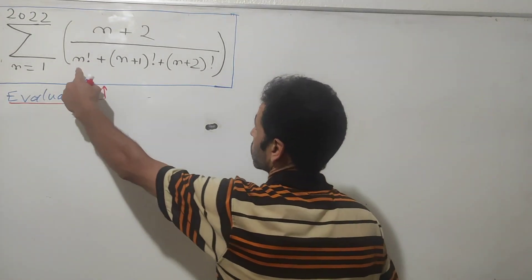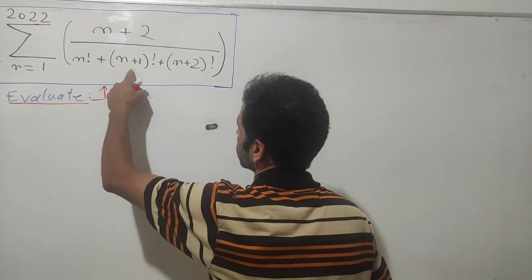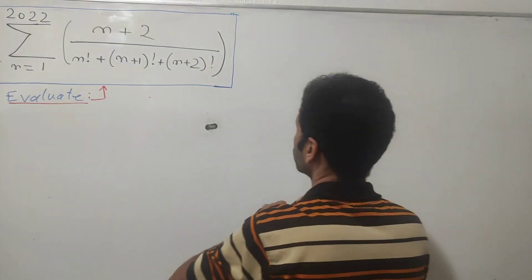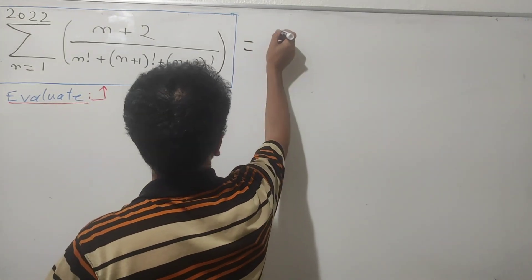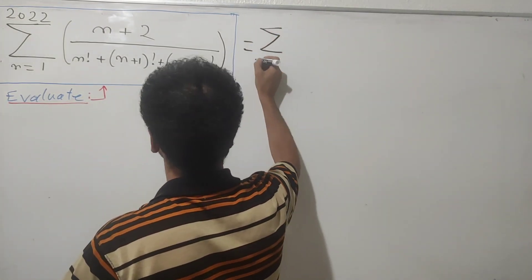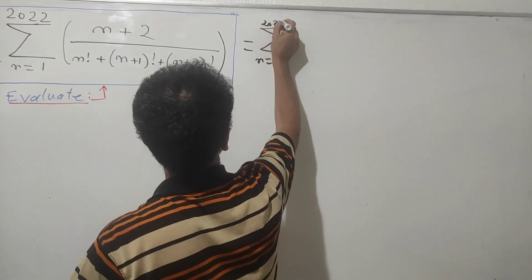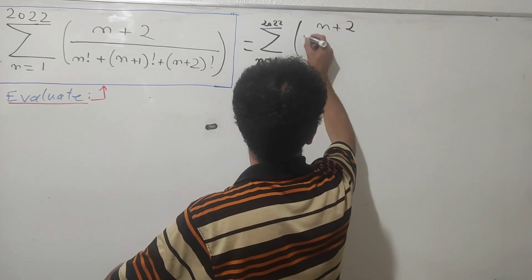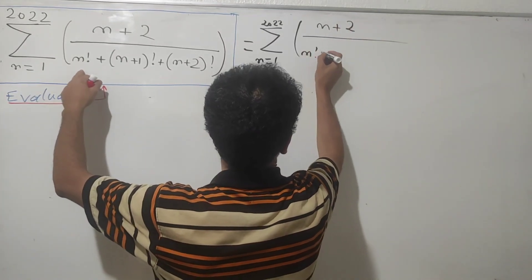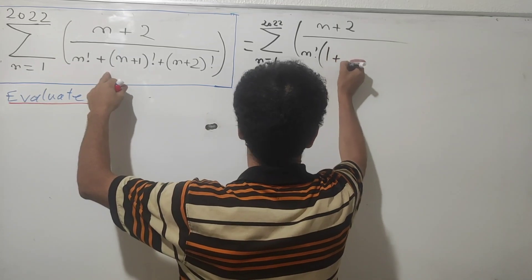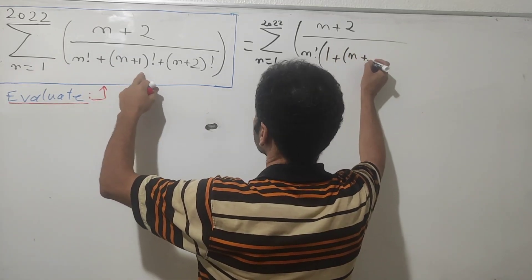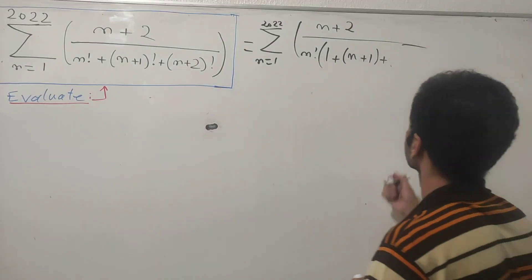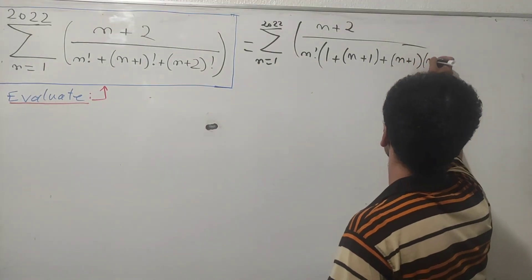Let's get started. I'm going to extract n factorial from each term in the denominator as a common factor. So this equals the sum as n goes from 1 to 2022, with n factorial taken out, leaving (n+2) in the numerator over n factorial times (1 + (n+1) + (n+1)(n+2)).